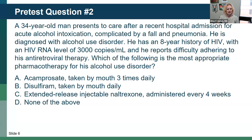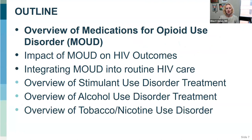88% of you selected extended-release naltrexone, which is also the ideal option for this patient. Great job with the pre-test questions. We'll start with our outline of the talk: we're going to overview medications for opioid use disorder, talk about the impact of these medications on HIV outcomes and integrating this treatment into your care, then discuss stimulant use disorder, alcohol treatment, and tobacco use with a more 50,000-foot view.